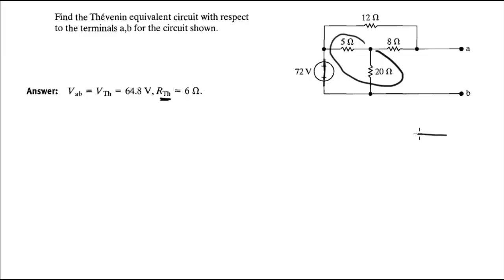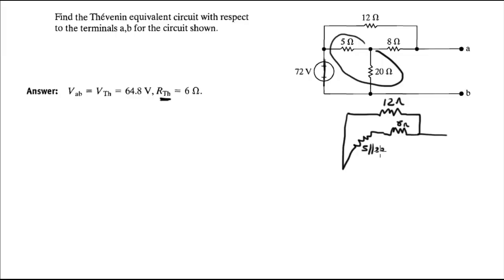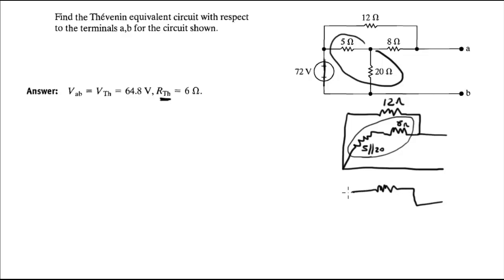In the new circuit, we have the 12-ohm resistance at the top, the 8-ohm resistance, and a new combination of the 5-ohm in parallel with the 20-ohm resistance. Then we combine those: 5 in parallel with 20, and add it in series with the 8-ohm, which gives another 12-ohm at the bottom.